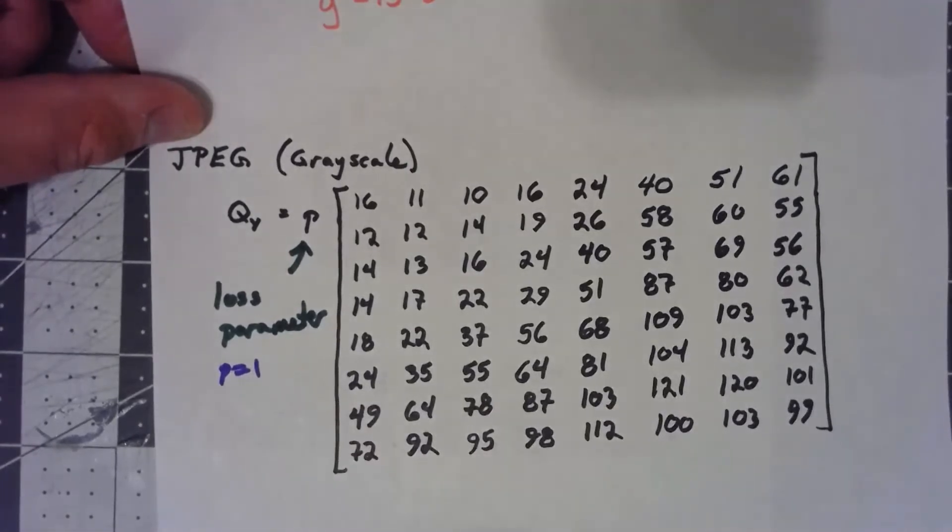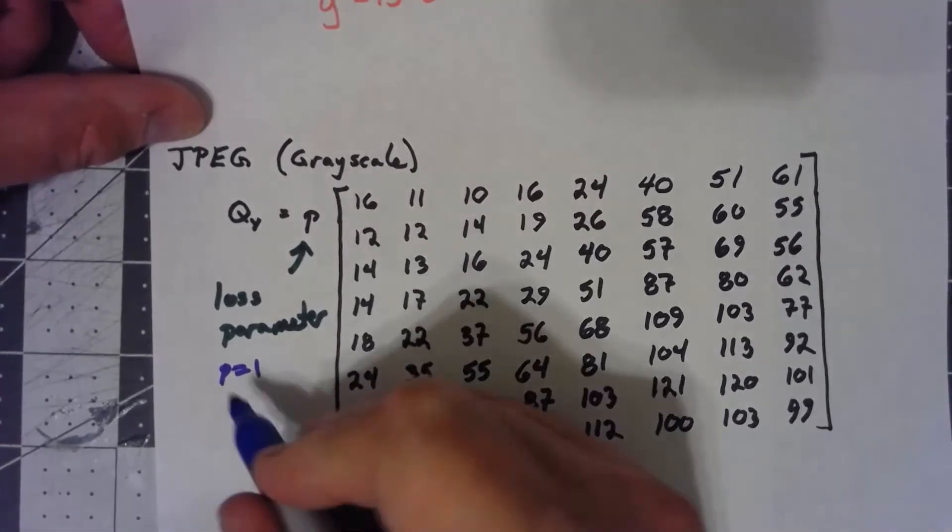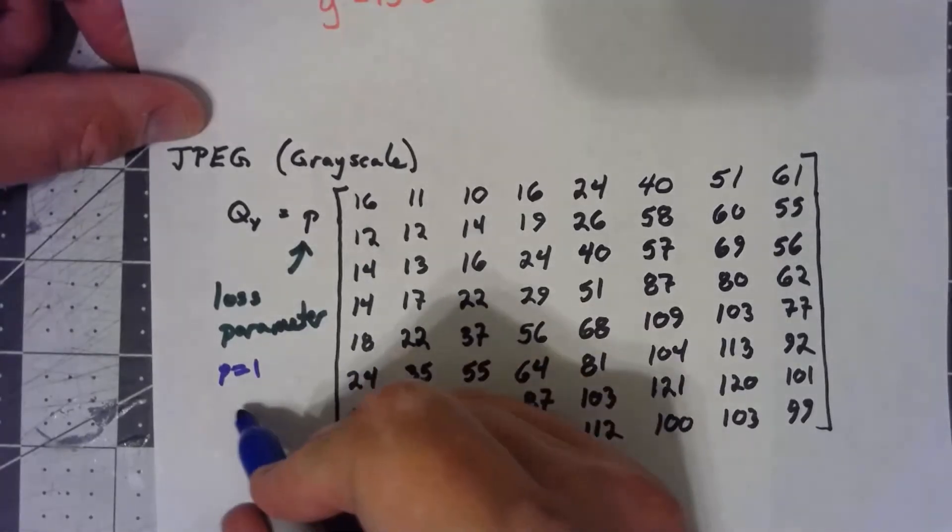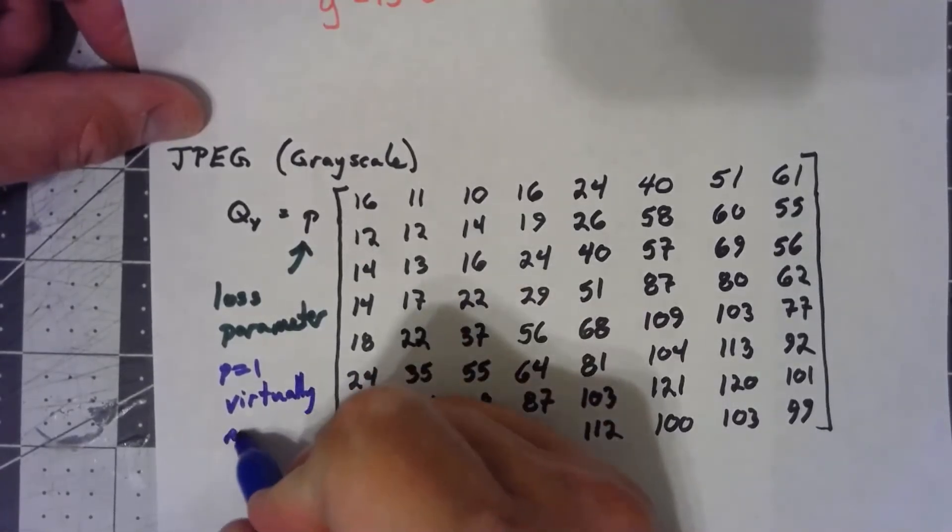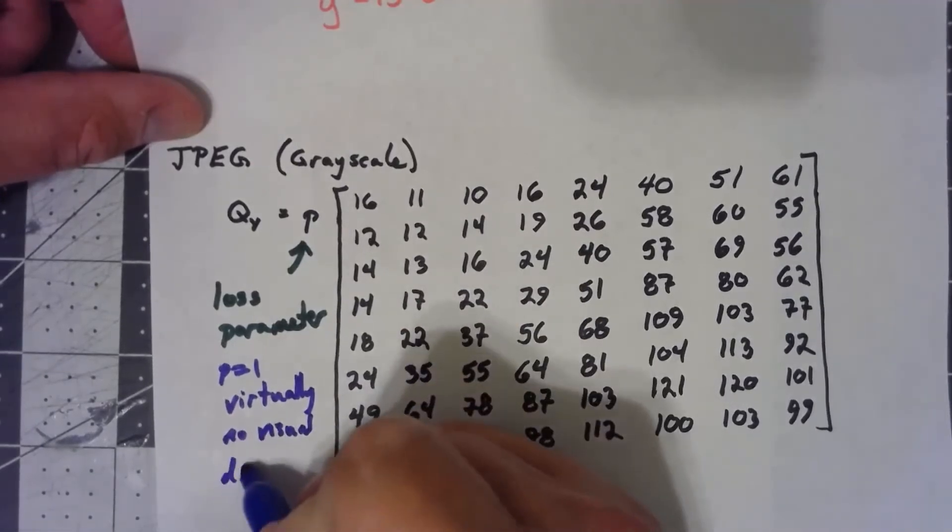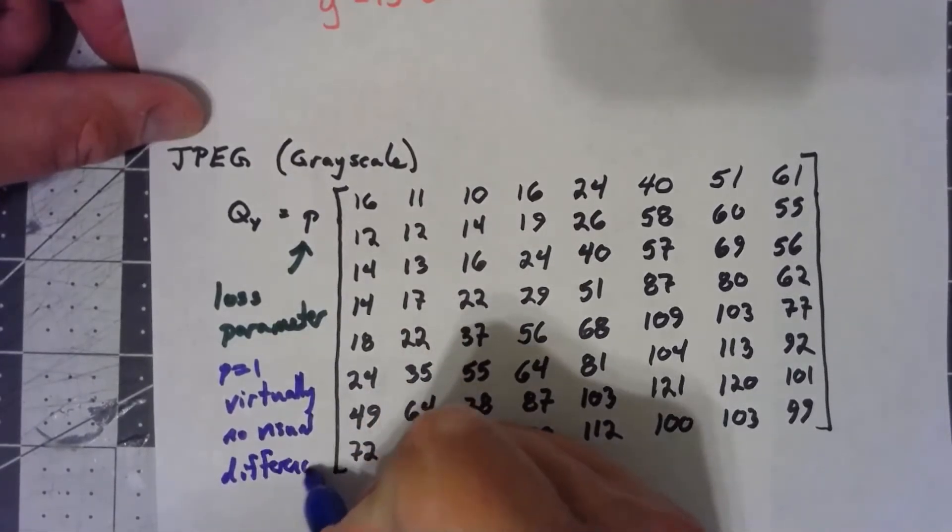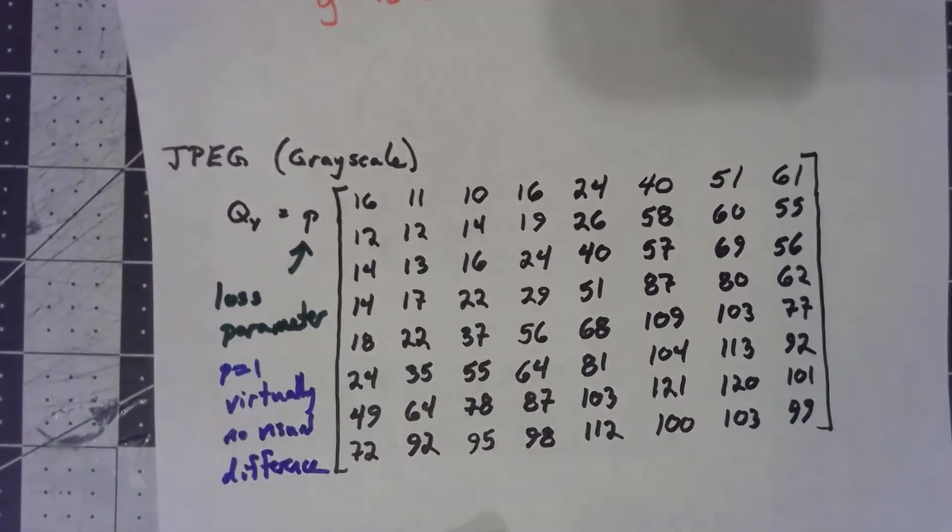But with P equals 1, there's virtually no visual difference. The little bits of roundoff that happen just don't really affect the image very much.